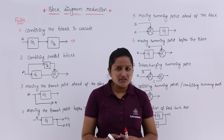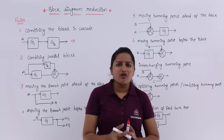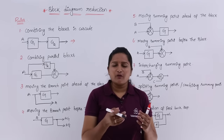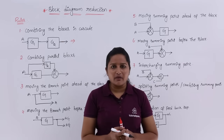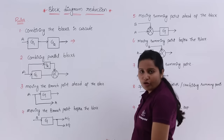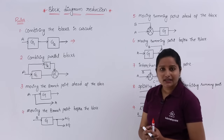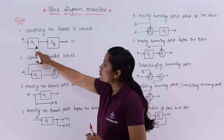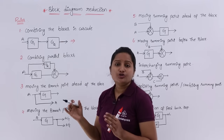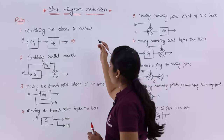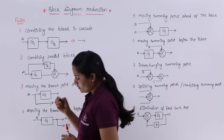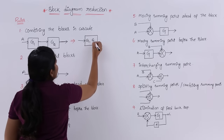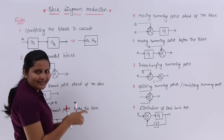Reducing the block diagram is better because we can reduce the complexity of the structure, find out the transfer function easily, and find out gain easily. For all these purposes, we are going to reduce our block diagram, but we need to follow some rules. These are some important rules that we must follow when reducing the block diagram. The first rule is combining the blocks in cascade. When you have two blocks in a block diagram, no need to consider them as individual blocks — you can combine them like this, multiplying G1 and G2.